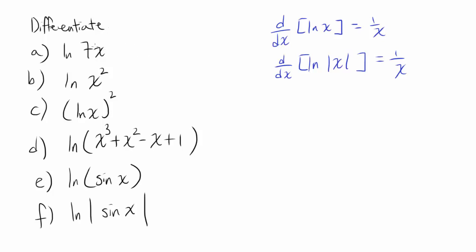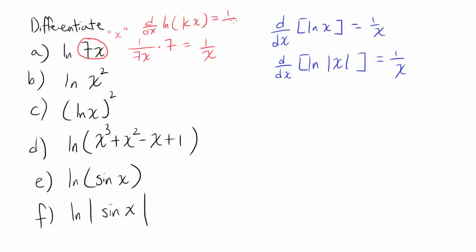The first one is natural log of 7x. We have to use the chain rule. Let's let 7x be our u for a moment. Differentiating with respect to 7x gets us 1 over 7x, and now we have to differentiate 7x and multiply by that, so multiply by 7, giving us 1 over x.